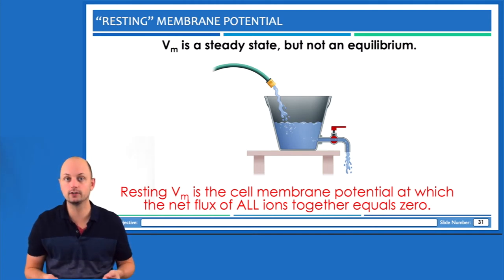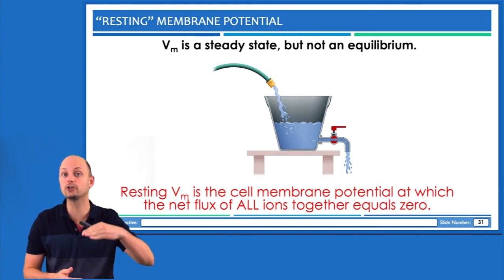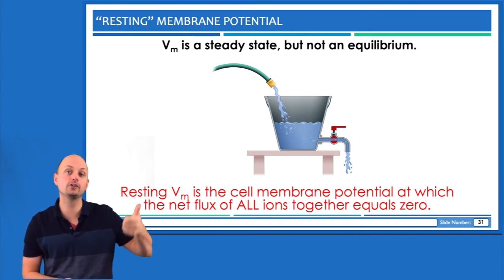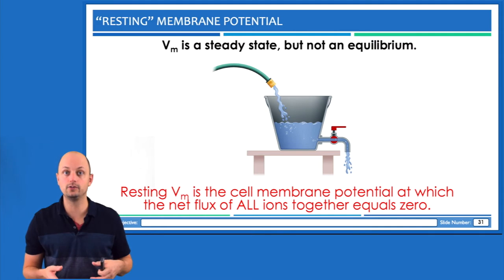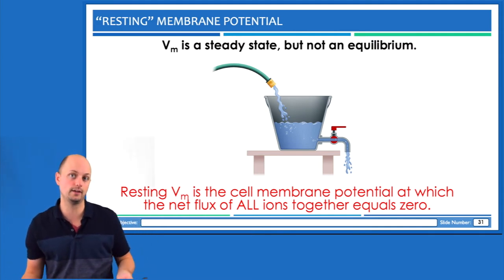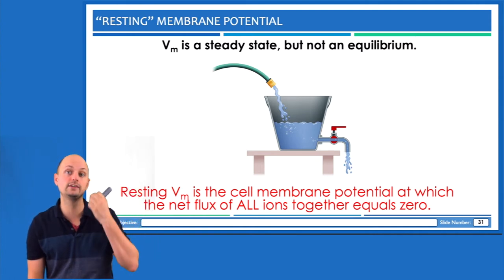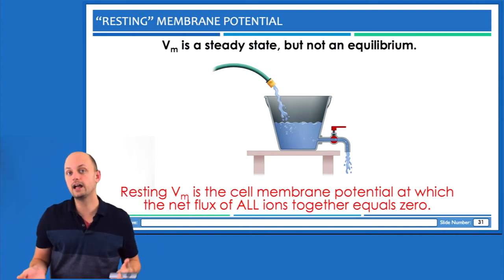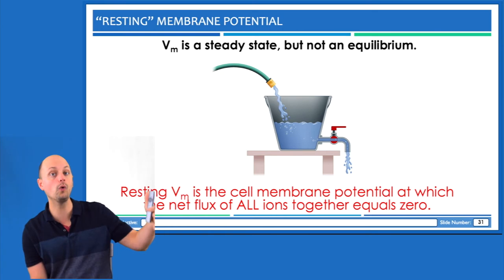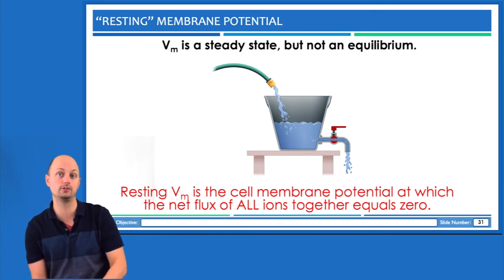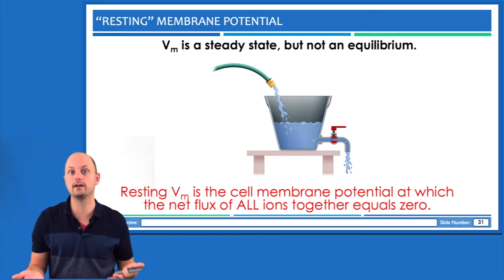In this picture, if I wanted to increase the water level, I could turn on the faucet a little bit more, or I could plug up some of those holes at the bottom. If I wanted to decrease the water level, I could turn down the faucet or drill more holes in the bottom of the bucket — that would cause the water level to reach a new steady state. The same thing can happen with membrane potential: I can move from resting membrane potential to a more positive or more negative membrane potential simply by changing ion permeability.